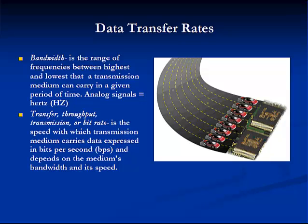Bandwidth is the range of frequencies between the highest and lowest that a transmission medium can carry in a given period of time. Transfer throughput, or bit rate, is the speed with which transmission media carries data, expressed in bits per second, and depends on the media's bandwidth and its transmission. All of this will be covered in much greater detail in Module 8.